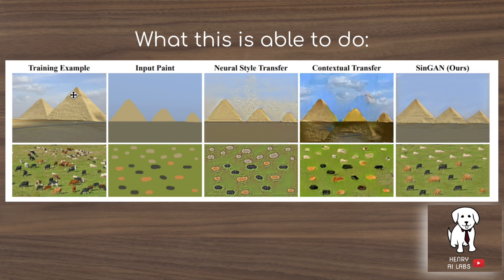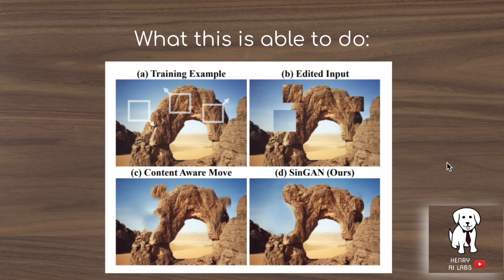For the pyramids example, you draw a new pyramid orientation and SYNGAN constructs a new image for you. With a pasture of cows, you sketch new places to put the cows and SYNGAN renders the image. SYNGAN also works really well for image editing — this example shows how you crop out patches, move them around the image, and SYNGAN learns to refine the image so the moved patches make sense, in a much smoother way compared to the previous content-aware move algorithm.